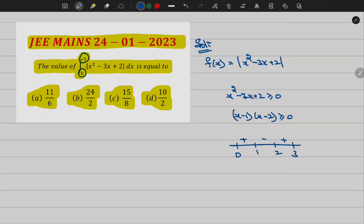Now let me substitute in my question. From 0 to 1 it is positive, so integral 0 to 1 of x square minus 3x plus 2 dx.